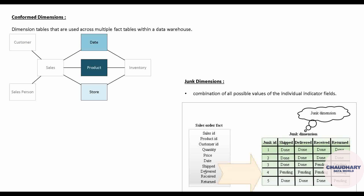That junk ID is recorded in the sales fact table. So instead of keeping all four columns — shipped, delivered, received, returned — only one attribute, the junk ID, comes into the fact table. For instance, junk ID 1 might indirectly explain that the item has been shipped, delivered, received, and returned. All the combinations are kept in the junk dimension table, each with its junk ID associated to the fact table.